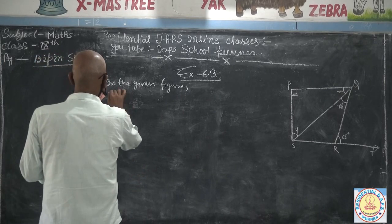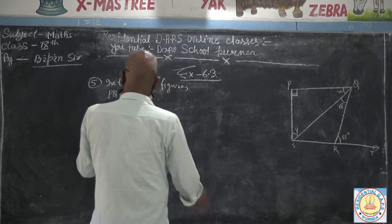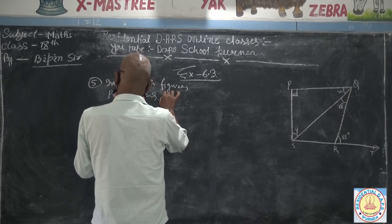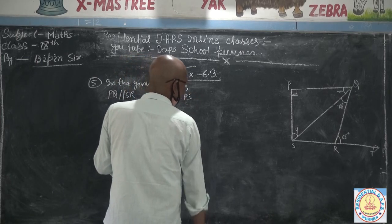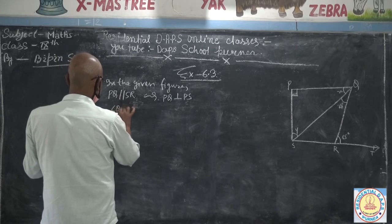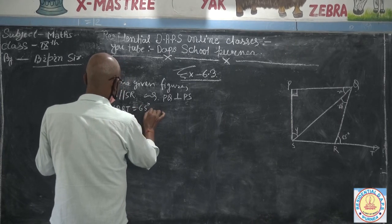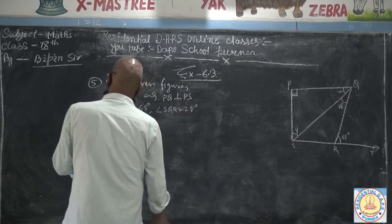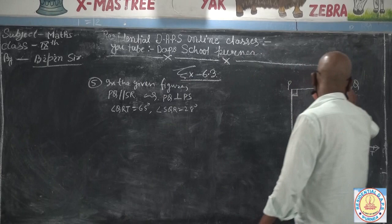PQ is parallel to SR and PQ is perpendicular to PS. Angle QRT is equal to 65 degrees and angle SQR is equal to 28 degrees. Find the values of X and Y.